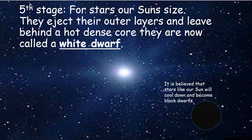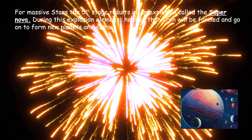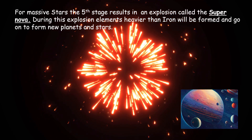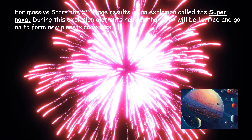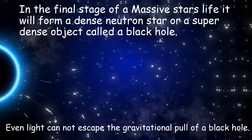For stars much bigger than our sun, there is a totally different fate awaiting. For massive stars, the fifth stage results in an explosion called the supernova. During this explosion, elements heavier than iron will be formed from fusion, and these elements will go on to form new planets and new stars. Elements like silver and gold are formed in these final stages of a massive star's life. In the final stage of a massive star's life, it will form a dense neutron star, or a superdense object we call a black hole.